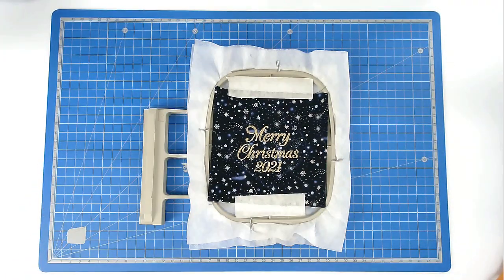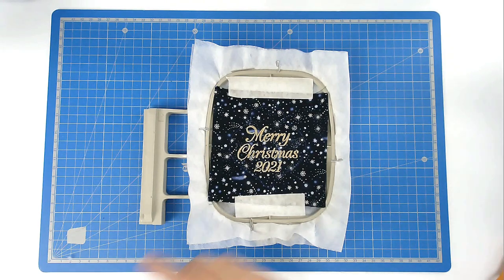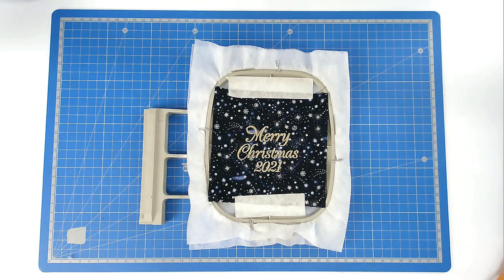Load your matching bobbin and thread color for the satin stitching into your machine. Then you're going to stitch round number seven and that's going to secure your fabrics to the hoop.